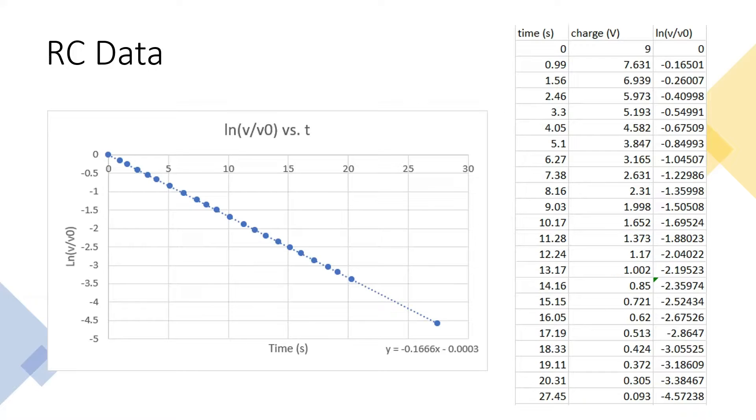RC data. Here we recorded the voltage over time of a circuit consisting of a 9 volt battery, a 200 microfarad capacitor, and a 30 ohm light bulb when the capacitor is discharging. Then we found the value of the natural log of voltage over the initial voltage of 9 volts and graphed that against time to find the equation of the line of best fit.